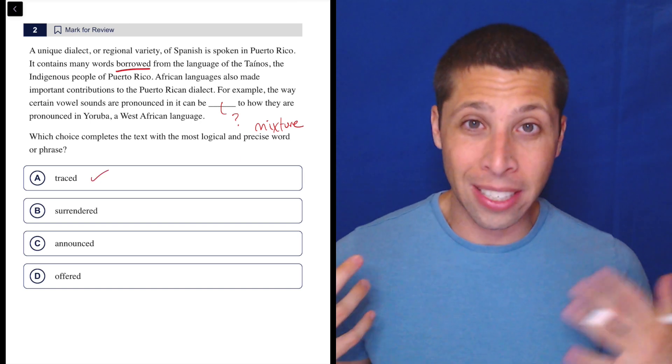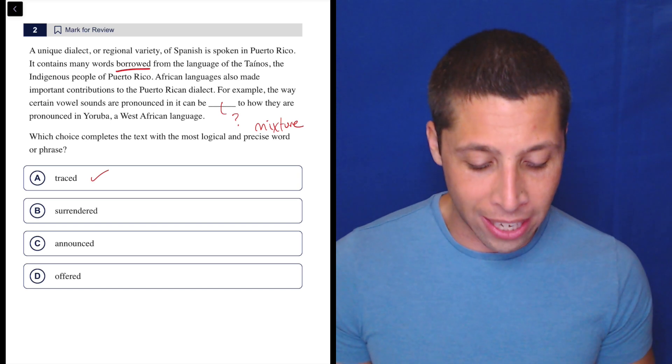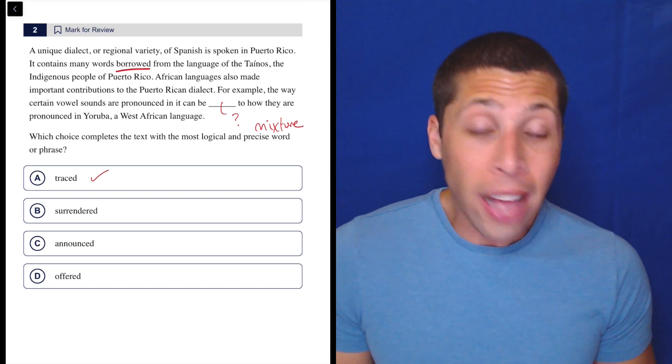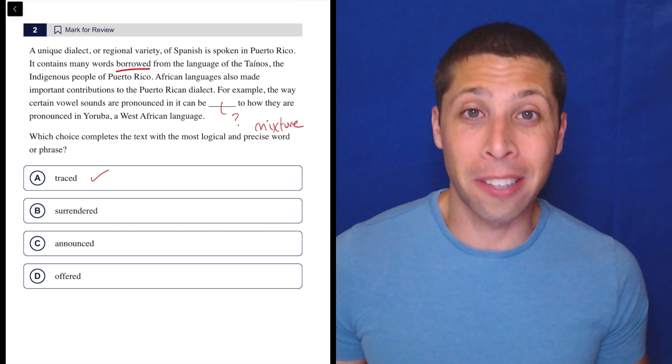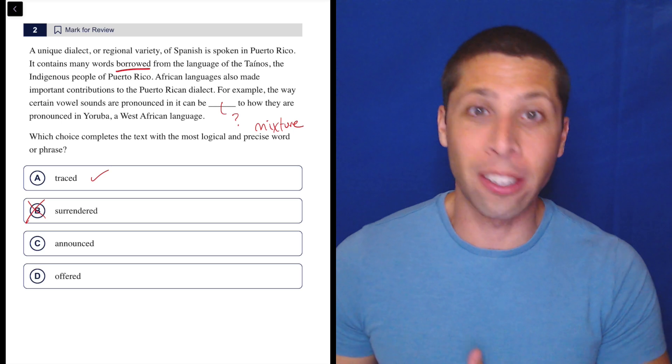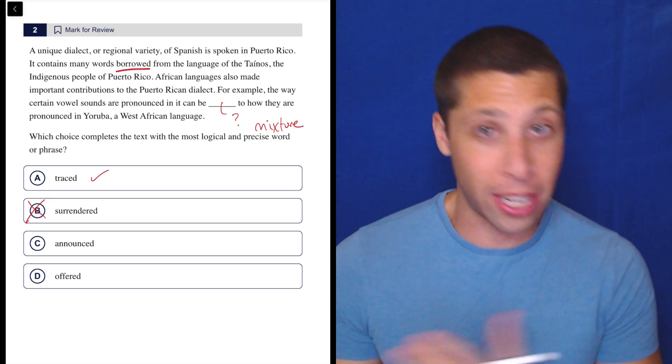Surrendered. Well, surrender means to kind of give up. So for example, the way certain vowel sounds are pronounced in it can be surrendered to how they are pronounced in Yoruba. I literally can't even twist that into some sort of sense. Like it does not make sense to say that. So hopefully you have enough of a sense of the English language that certain words will just be like, that doesn't make any sense. Don't force it in, get rid of it.